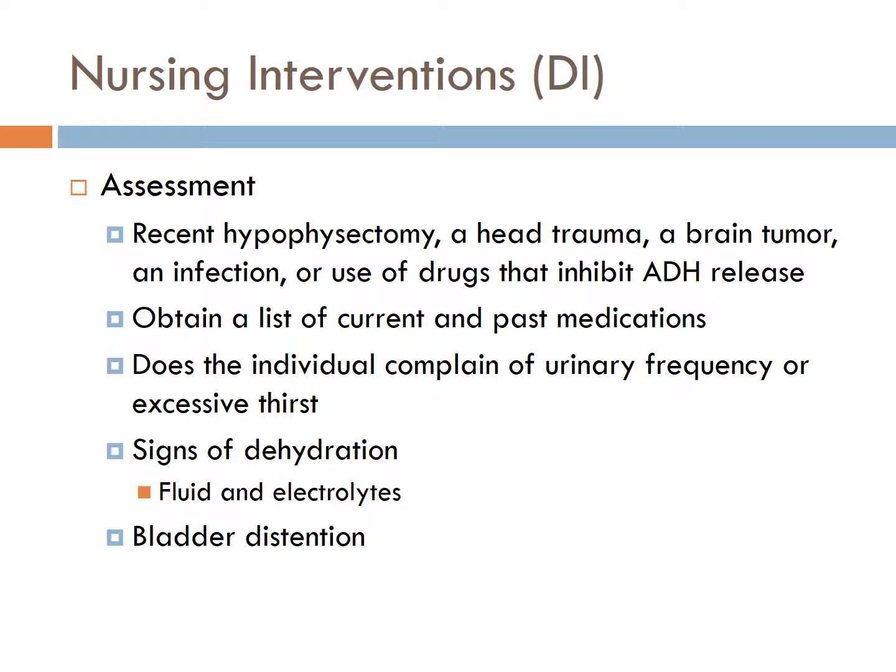Determine if the patient had a recent hypophysectomy, head trauma, brain tumor, infection, or use of drugs that inhibit ADH release like ethanol, lithium, and phenytoin. Determine what manifestations associated with DI are present, such as urinary frequency or excessive thirst. Are signs of dehydration such as tachycardia, poor skin turgor, dry mucous membranes, or neurological changes like altered level of consciousness, disorientation, decreased attention span, or irritability present? Are measures of fluid and electrolyte status within normal limits? Is bladder distension present?